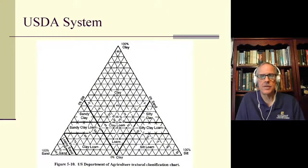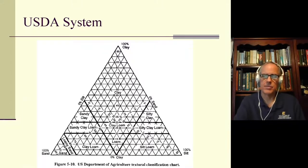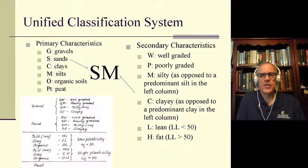The AASHTO system was originally developed in the 1920s as the Bureau of Public Roads System. Its primary purpose is aimed at classifications for pavement purposes. The Unified Classification System attempts to break down virtually all soils into a two-letter code.